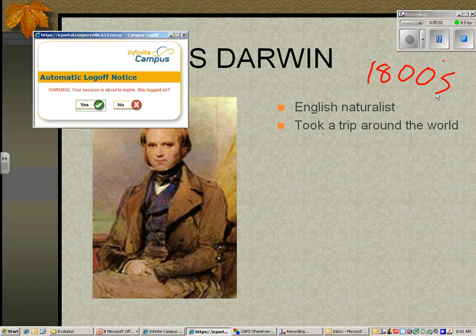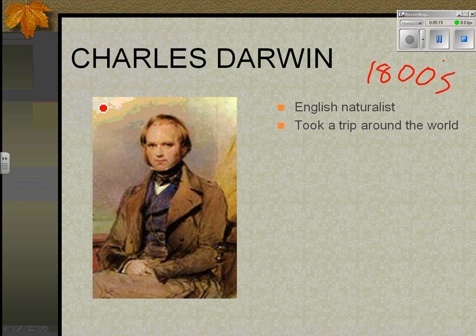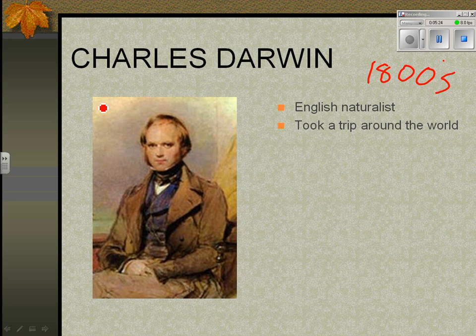They didn't make it to North America at all, mostly because those places had already been explored — England and North America obviously knew a lot about each other. So they went the southern route. There's a picture in your book around page 400 or so that shows their trip.